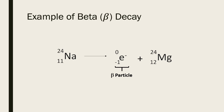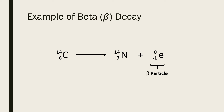Here are examples for beta decay. Sodium-24 decays into magnesium-24 and releases an electron, which is our beta particle. In another example, carbon-14 decays into nitrogen-14 and releases a beta particle which is an electron.